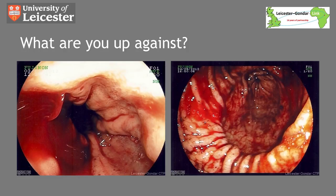On this slide you can see a patient with active bleeding from oesophageal varices on the left and an arterial spurt from a Dieulafoy lesion on the right. After seeing these images you can understand why these patients can be so unwell.